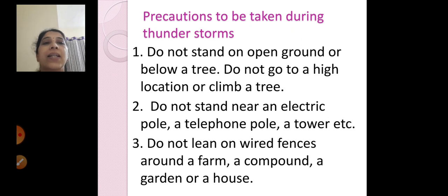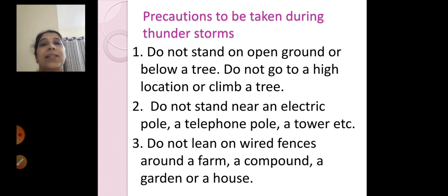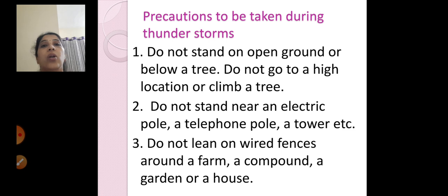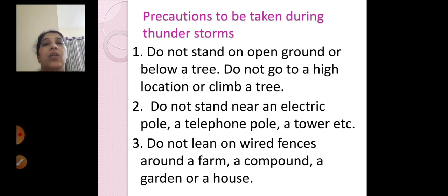The second precaution: do not stand near an electric pole, a telephone pole, a tower, etc. You should not stand near these because electricity gets attracted towards thunderstorms and lightning. Also, do not lean on wired fences around a farm, a compound, a garden, or a house.